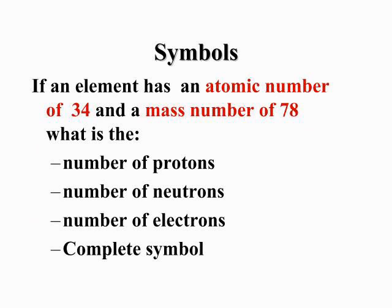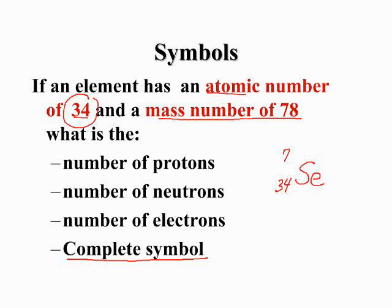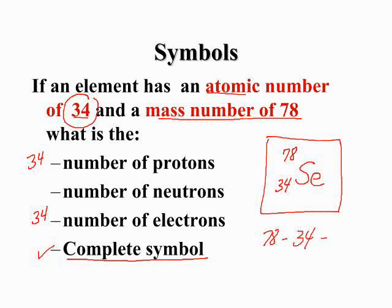Now this problem is slightly different. We are asked to write the complete symbol given this information. We have an atomic number of 34 and a mass number of 78. If we know the atomic number is 34, we can look up on the periodic table and find element 34, and that's selenium, symbol SE. 34 goes down here, mass number 78. So we know we have 34 protons, 34 electrons, we've done the complete symbol here. To find the number of neutrons, we take our 78 minus 34, which is going to give us 44 neutrons.